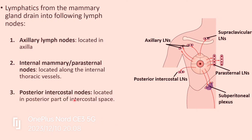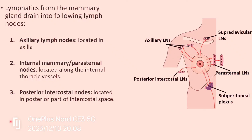Third are the posterior intercostal nodes, present in the intercostal space on its posterior aspect, very close to the head of the ribs. Additionally, some lymph from the breast drains into the supraclavicular nodes, and the lymphatics also communicate with the subperitoneal and subdiaphragmatic plexus present in the abdomen.